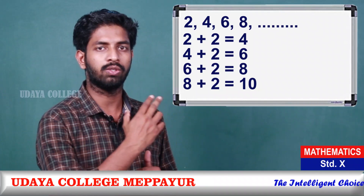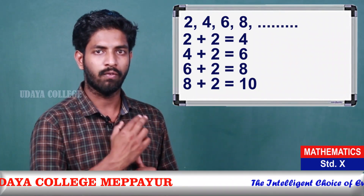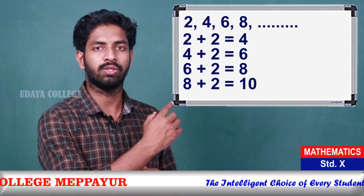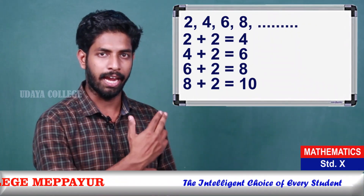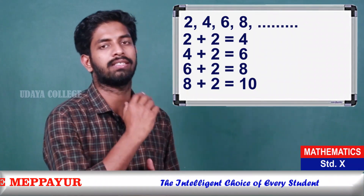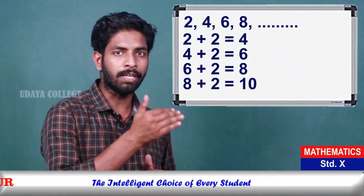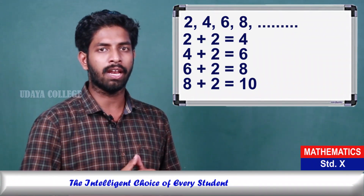Here is another pattern: 2, 4, 6, 6, 8, 8, yes, 10. This is the multiple of two.